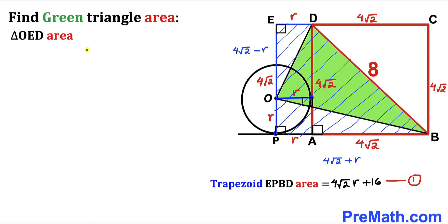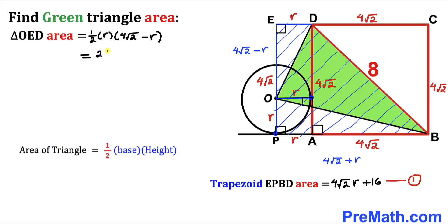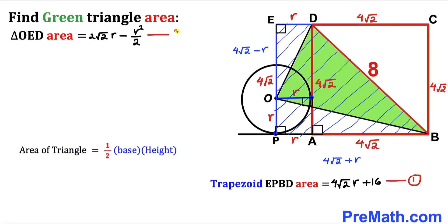Let's calculate the area of right triangle OED. Using Area = ½ × base × height, our base is r and our height is 4√2 − r. So the area is ½ × r × (4√2 − r). Distributing and simplifying, this gives 2√2·r − r²/2. Let's call this Equation 2.